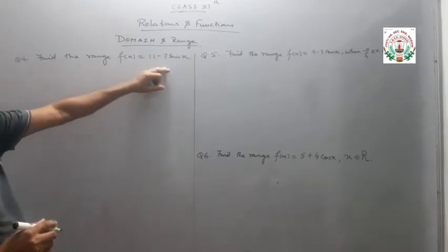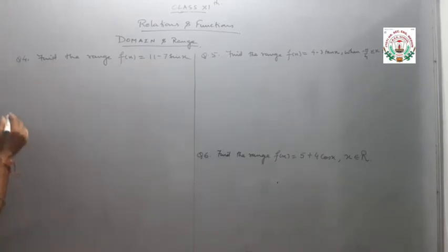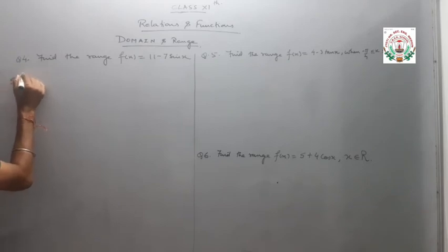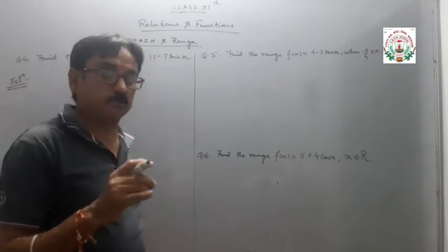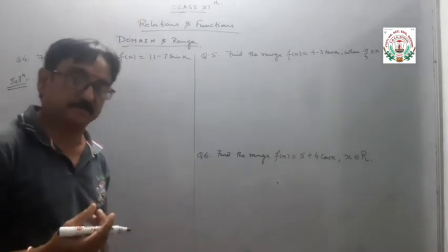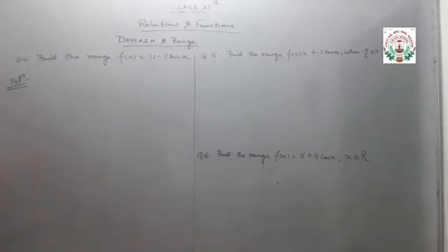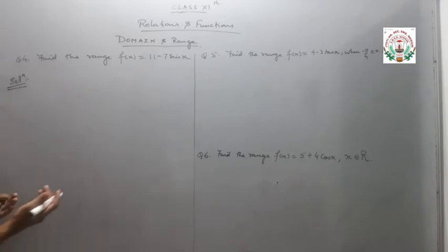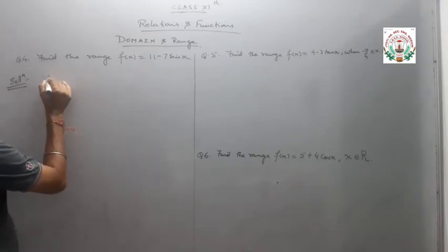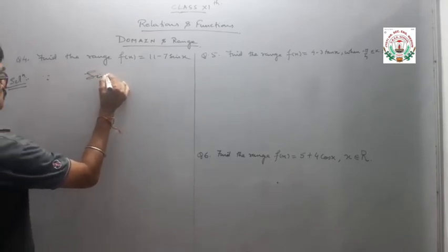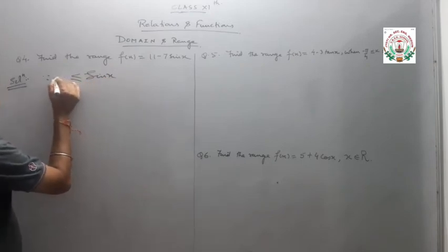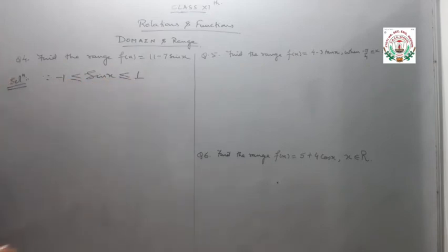Next question: find the range of the function 11 minus 7 sin x. Since for all trigonometric ratios — sin, cos, tan, cosec, sec — the value of sin x lies between minus 1 and 1, that is: minus 1 is less than or equal to sin x, less than or equal to 1.